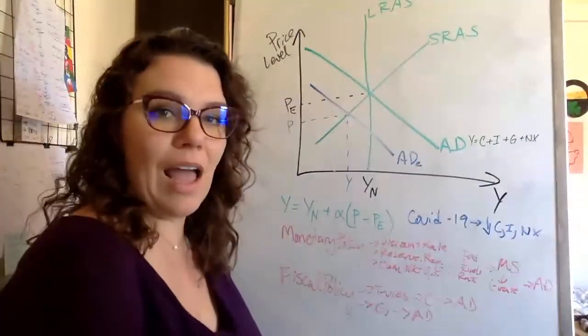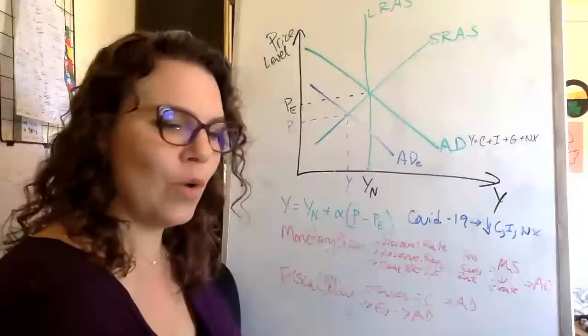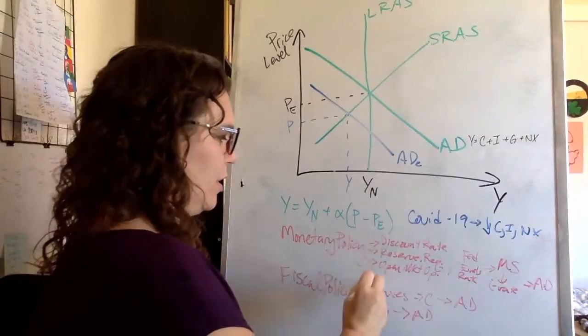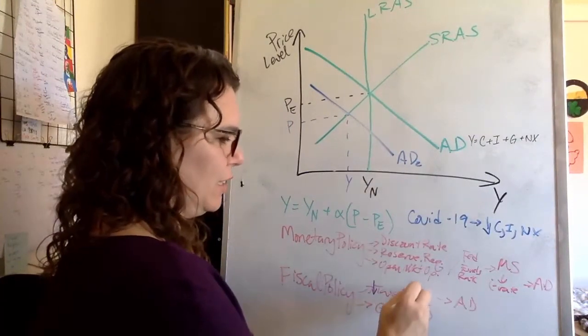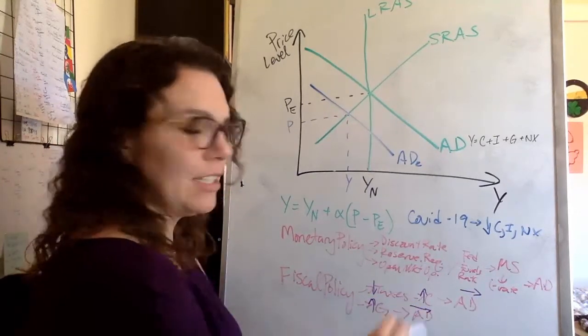So how would we change the economy with fiscal policy? That's easy. We want to lower taxes to raise consumption to shift aggregate demand out, or raise government spending to shift aggregate demand out.